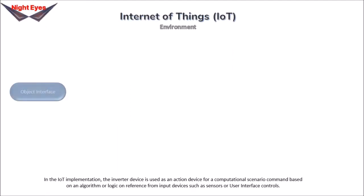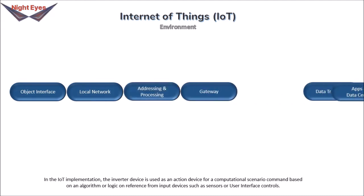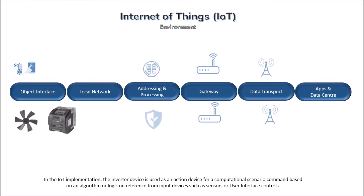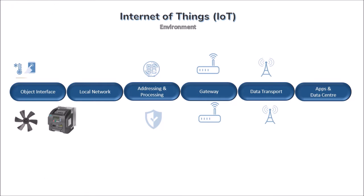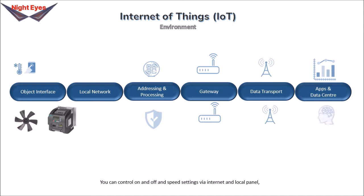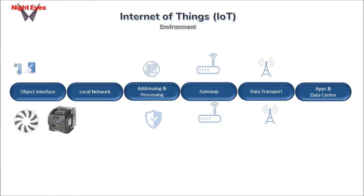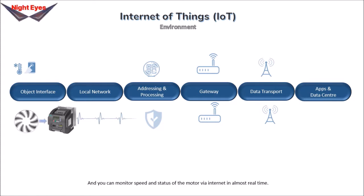In the IoT implementation, the inverter device is used as an action device for a computational scenario command based on an algorithm or logic, with reference from input devices such as sensors or user interface controls. You can control on/off and speed settings via internet and local panel, and monitor speed and status of the motor via internet in almost real time.